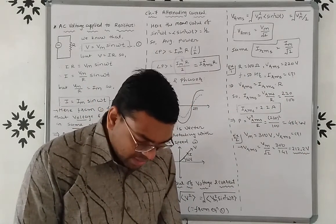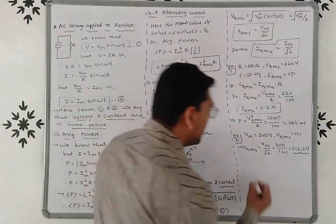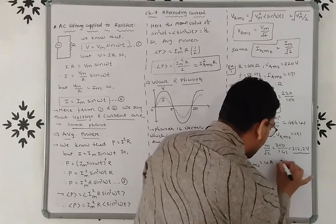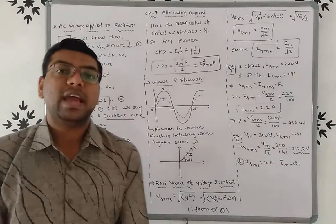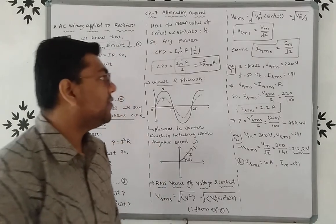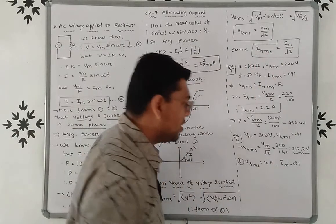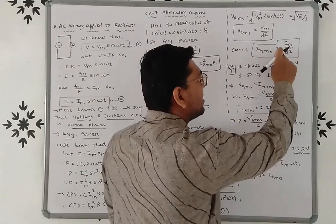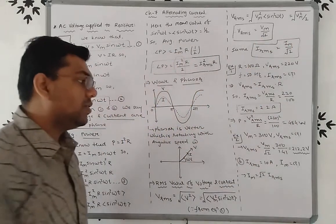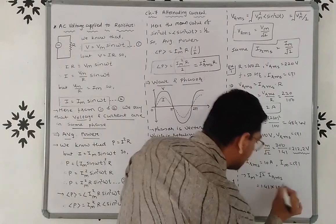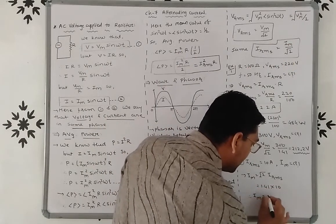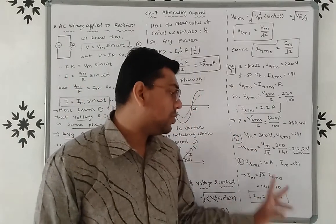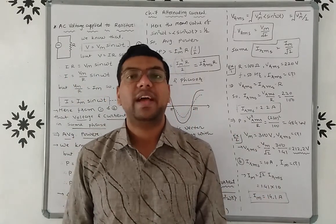Second part: The RMS value of current in an AC circuit is 10 mA. We have to find the peak value of current Im. We know Irms = Im / √2, so Im = √2 · Irms = 1.41 × 10 = 14.1 mA. The peak value of current Im = √2 · Irms = 14.1 mA. Thank you friends.